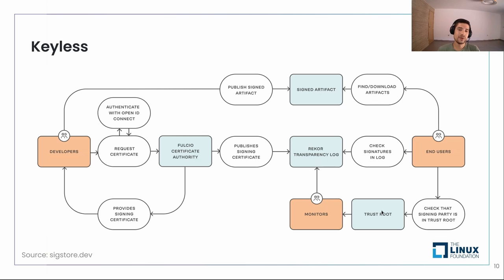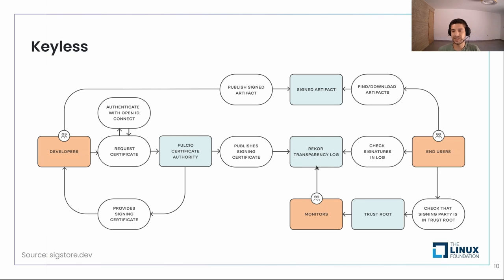That's it — we don't need anything. We don't need a public key, nothing at all. You don't need a private key for signing, and you don't need a public key for verifying. For monitors, it's even easier — everything is stored in the Rekor transparency log. Remember, Rekor is an immutable ledger of metadata, so no one can modify or delete any existing record. It's perfect for monitoring — you can query it via the RESTful API or CLI.